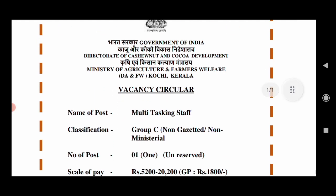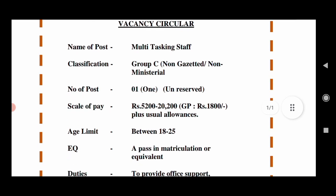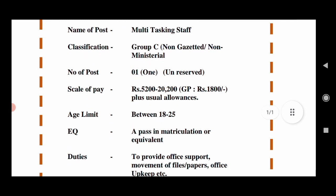The Government of India, Directorate of Cashew and Cocoa Development, Ministry of Agriculture and Farmers Welfare — there is a vacancy in Kerala. It is a Multi-Tasking Staff post, classified as Group C, Non-Gazetted, Non-Ministerial — a central government Group C post.